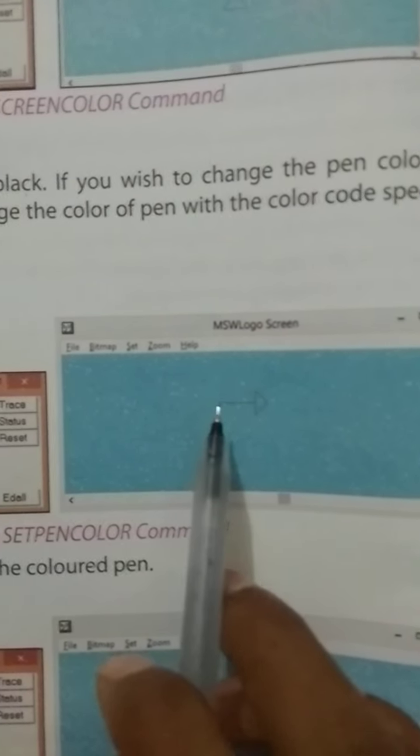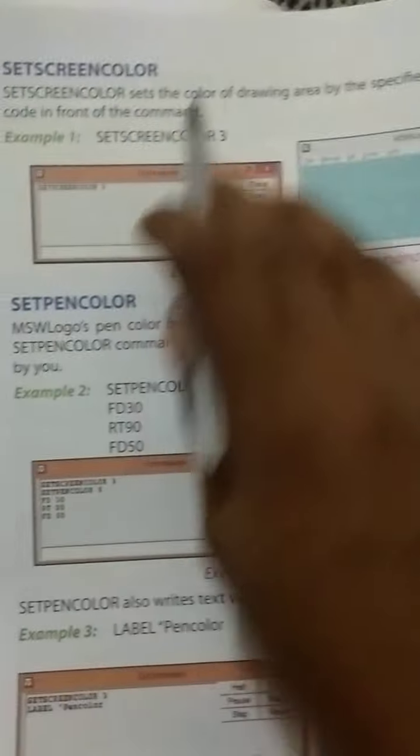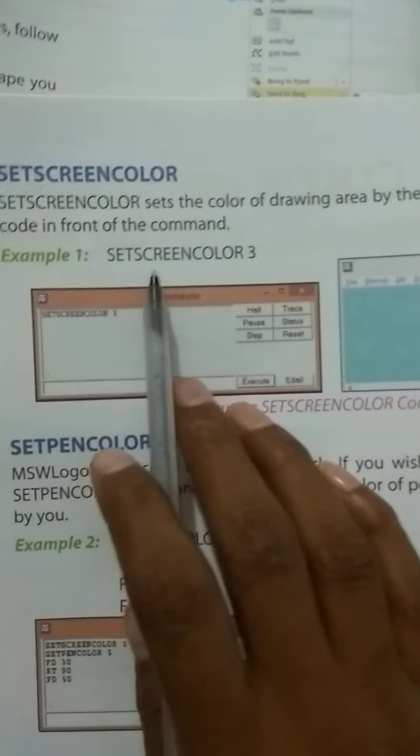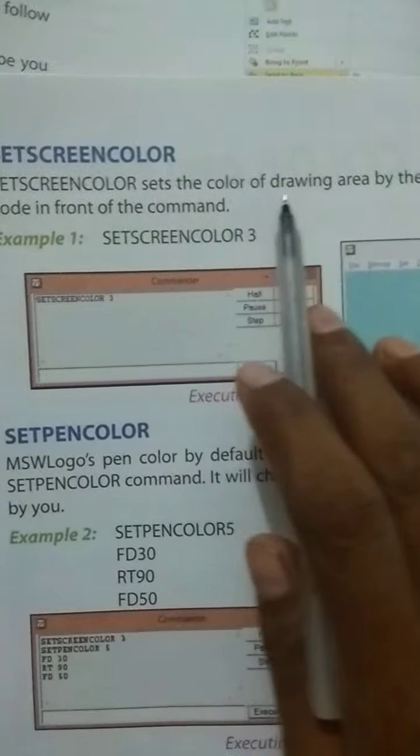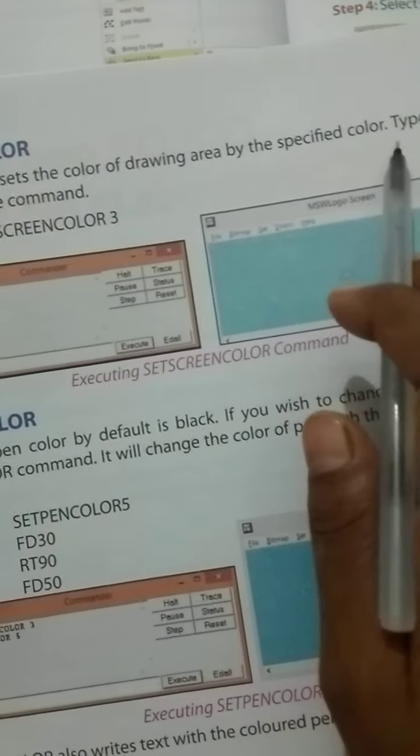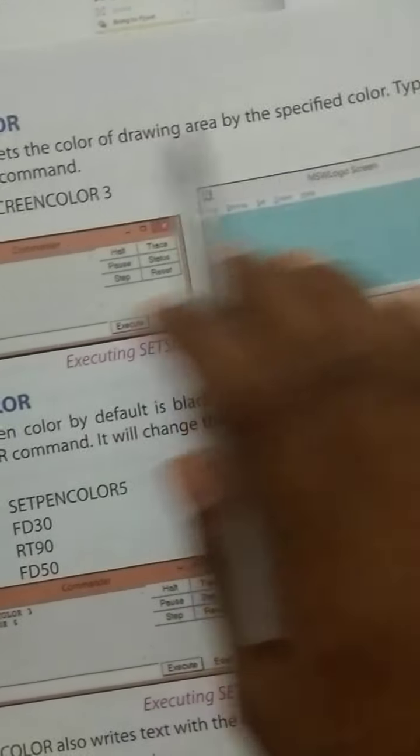The paint color can be changed from black to red, and this is explained in this topic. Set paint color sets the color of the drawing area by the specified color. Type the color code in front of the command.